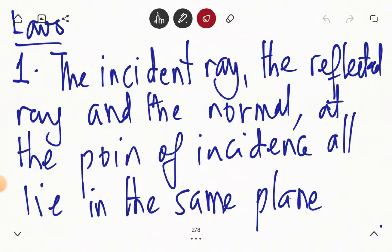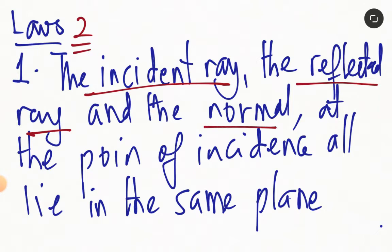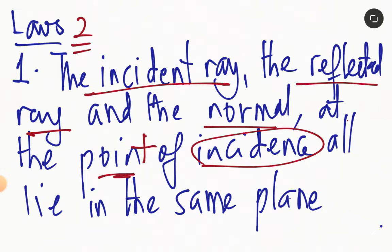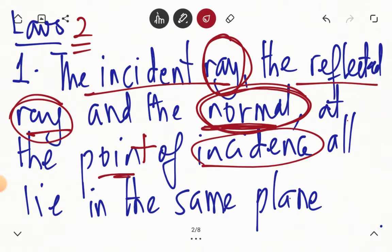Reflection on plain surfaces is governed by two laws. Law 1 says that the incident ray, the reflected ray, and the normal at the point of incidence all lie in the same plane. Let's remember that this normal is not a ray. We've described the incident ray and the reflected ray, but the normal is not a ray. We will show that in a moment.